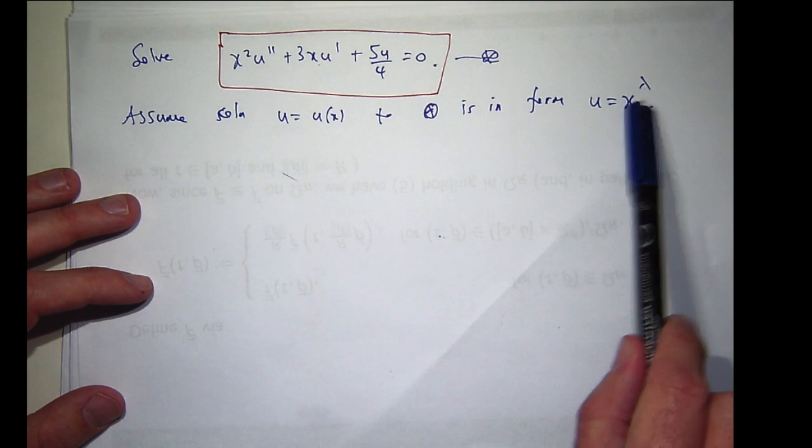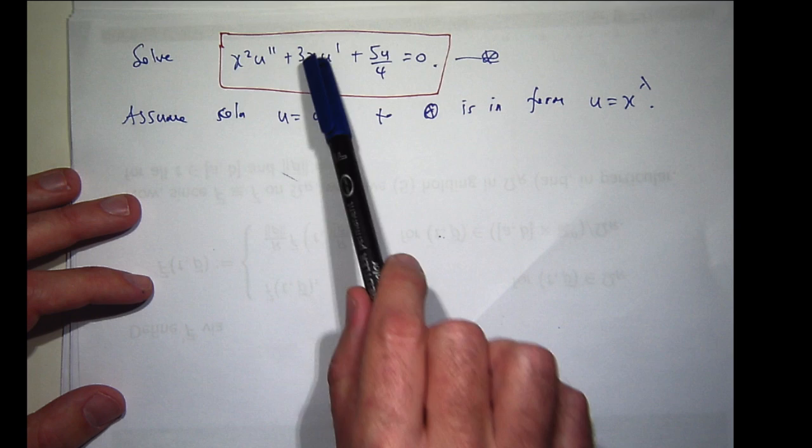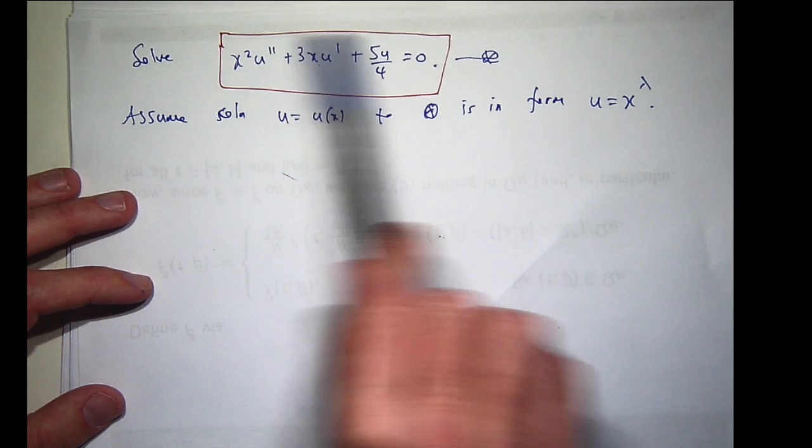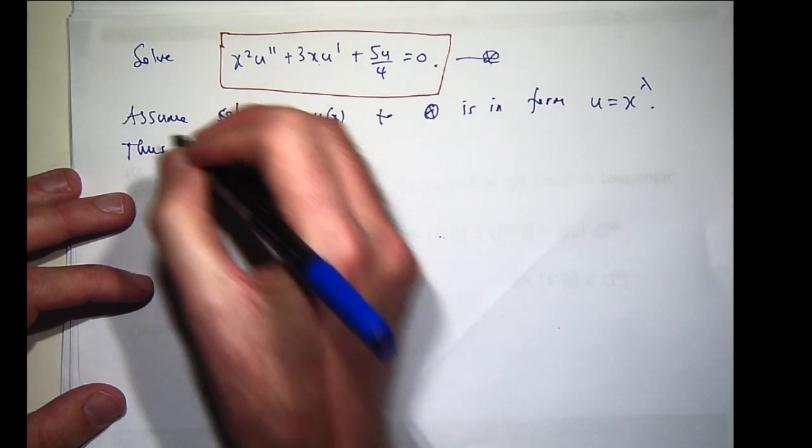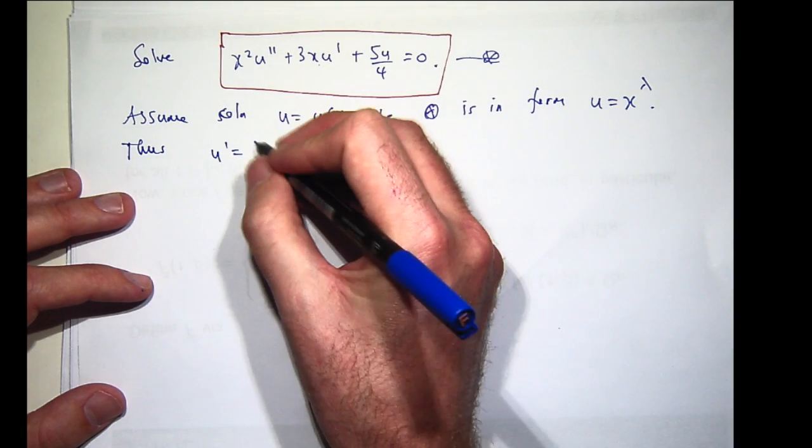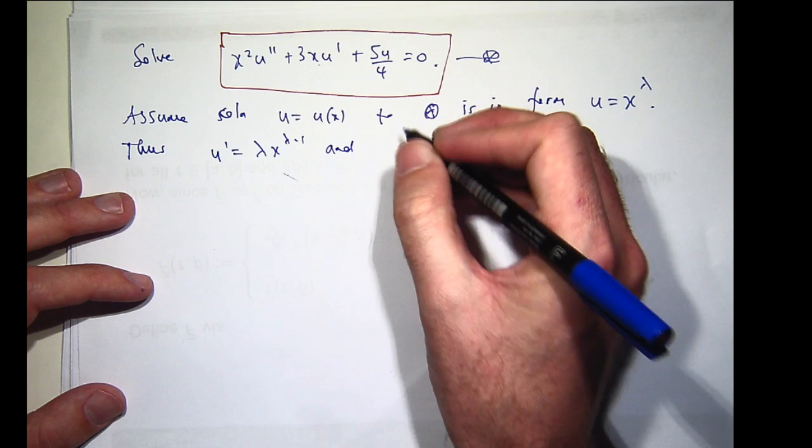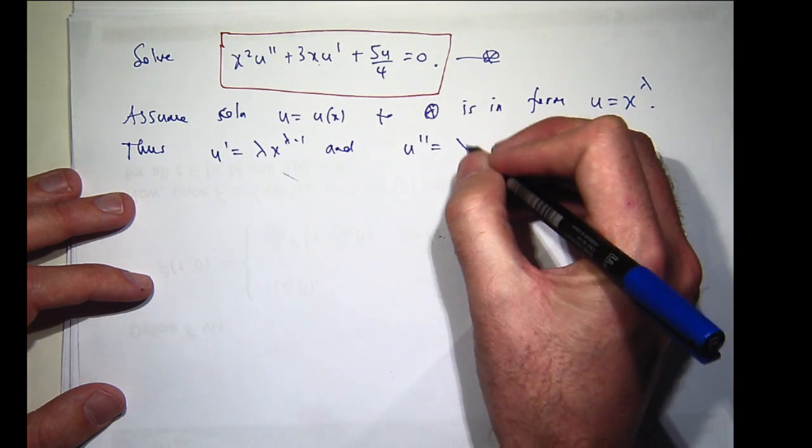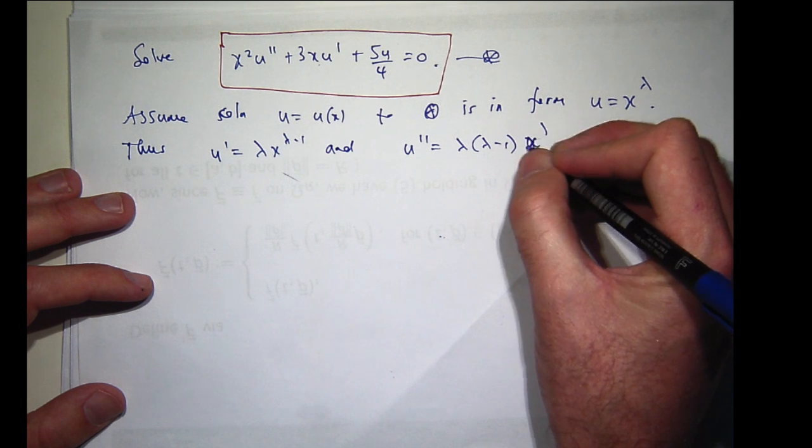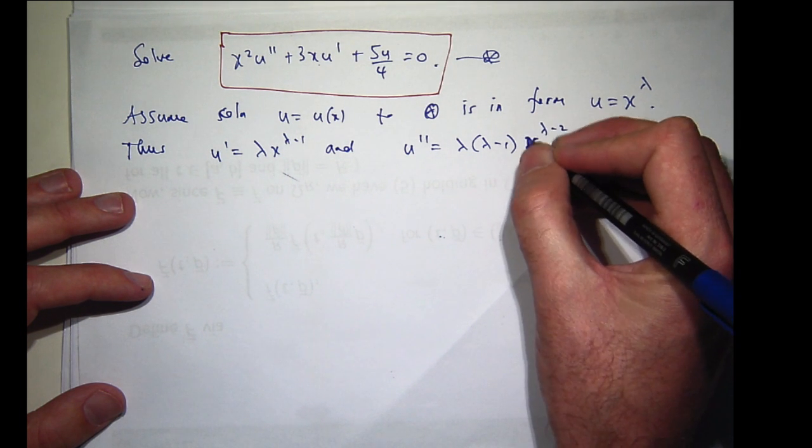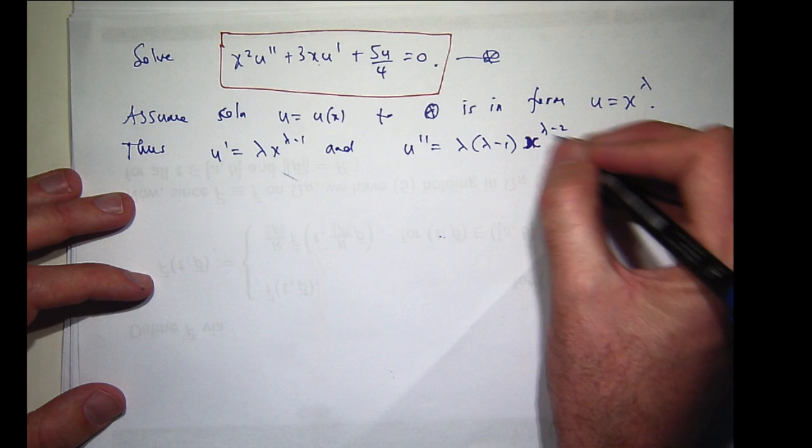Let's see how we can determine λ. We'll differentiate it once, differentiate it twice, and substitute it into the starred equation.